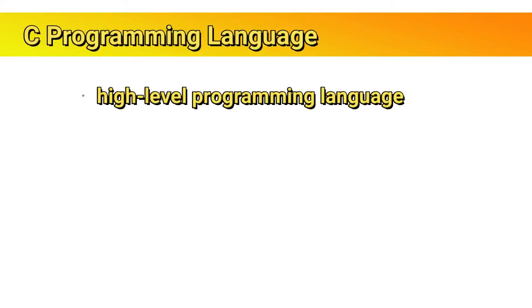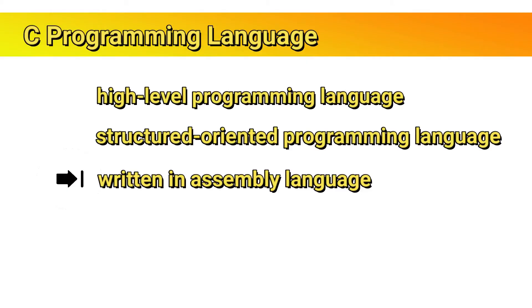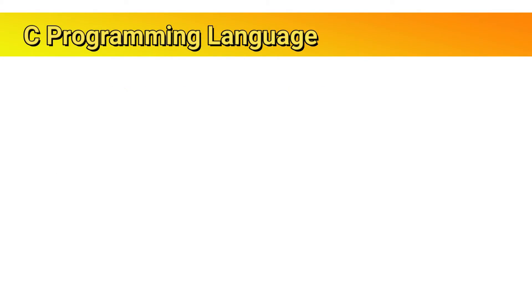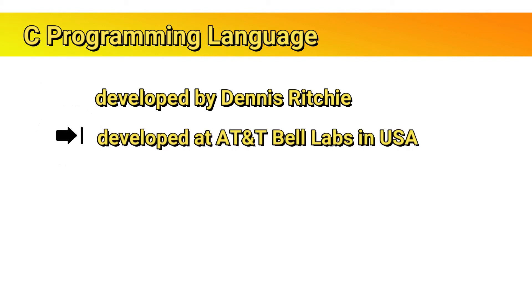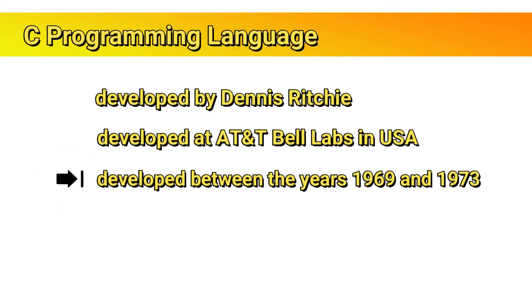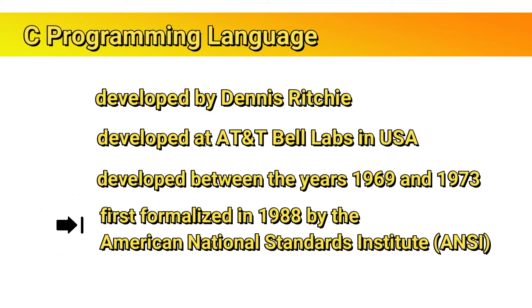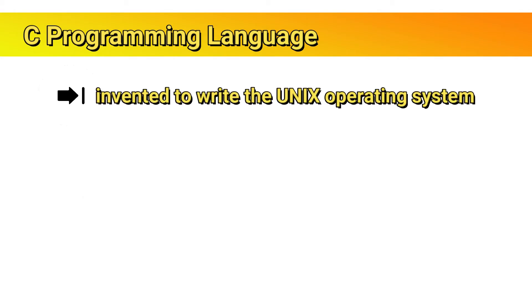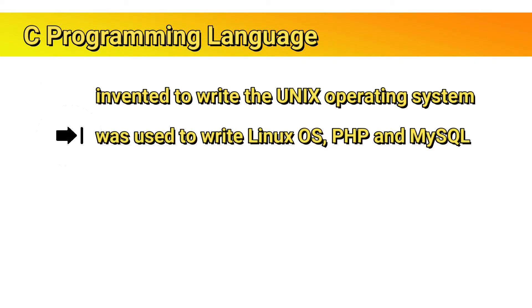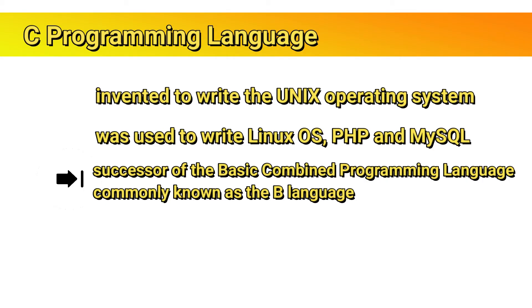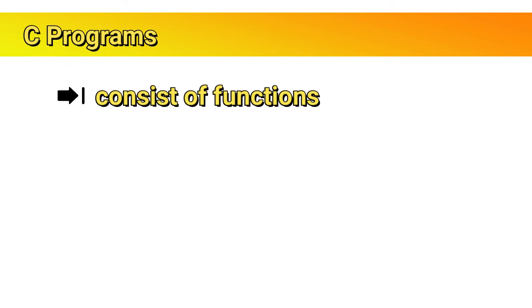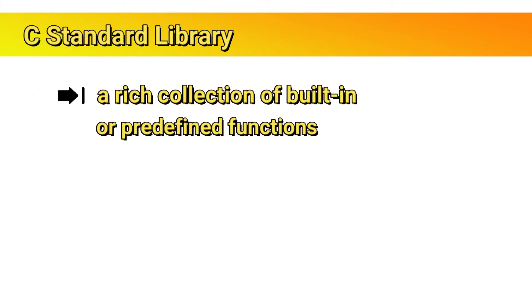Next topic is the C standard library. In this course, we will be using the C programming language. C is a high-level, structured-oriented programming language written in assembly language and is used in general-purpose programming. It was developed by Dennis Ritchie at AT&T Bell Labs in the USA between 1969 and 1973. It was first formalized by the American National Standards Institute in 1988. C was invented to write Unix operating systems. Linux, OS, PHP, and MySQL are all written in C. C is a successor of the B language. C programs consist of modules or pieces called functions.